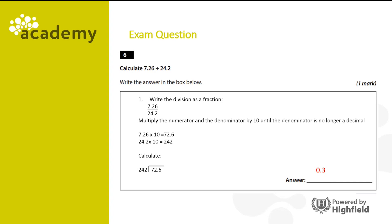So firstly, how many times does 242 divide into 7? Well, that's obviously 0, but now we have a remainder of 7. So now we need to think about how many times does 242 divide into 72? That's also obviously 0, and now we have a remainder of 72. So now we need to think about how many times 242 divides into 726. It obviously goes in at least once, and we can see it'll go in twice because 242 times 2 is less than 500.